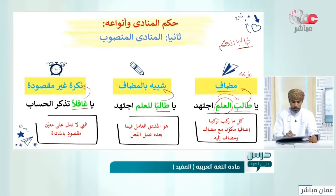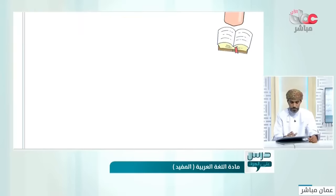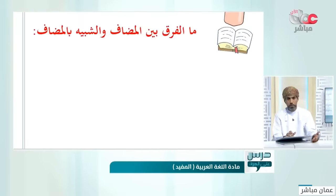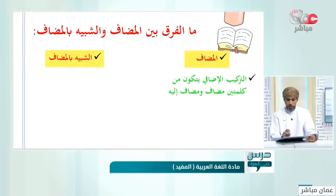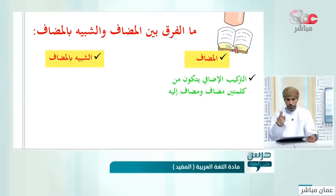إذا أردنا أن نحدد شخصاً معيناً بذاته نقول 'يا غافل' ببناء المنادى. المنادى 'غافلاً' نوعه نكرة غير مقصودة، و'طالباً' نوعه شبيه بالمضاف، و'طالب العلم' نوعه مضاف، وحكمه منصوب منادى منصوب مباشرة.